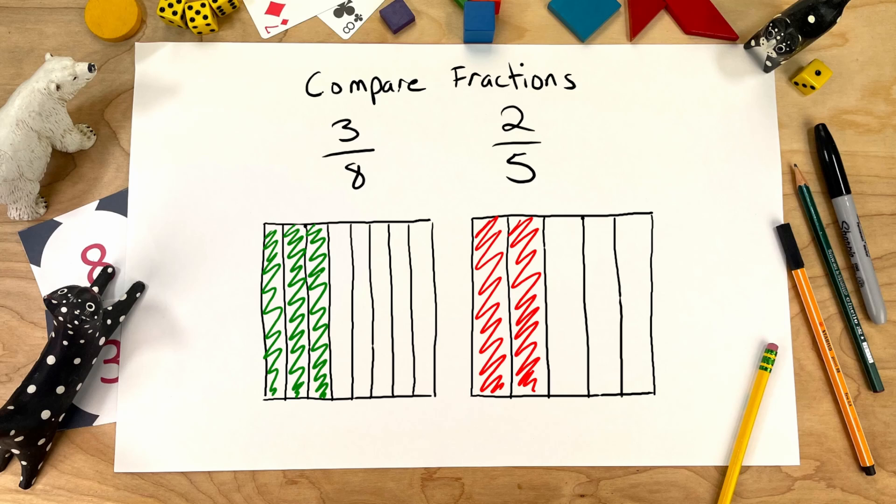They look about the same, but they're not the same things. These are eighths and these are fifths, apples and oranges. We need some way to compare them so they're like each other. So, we want to use like fractions.